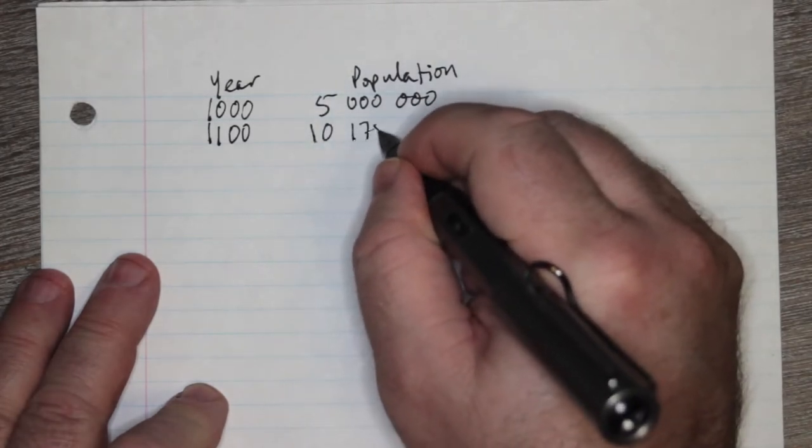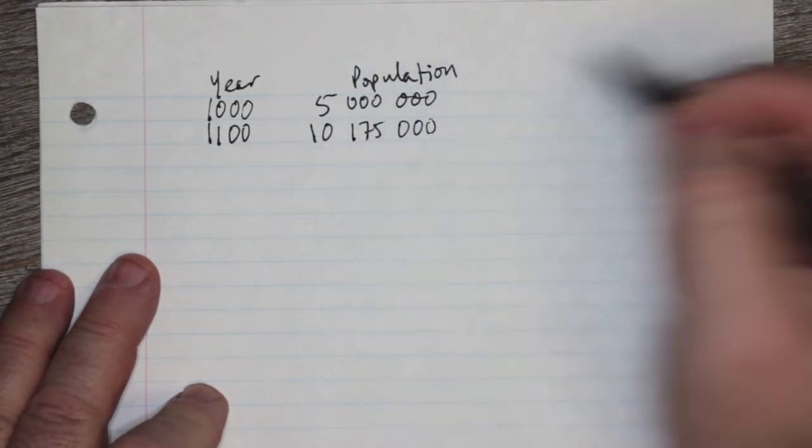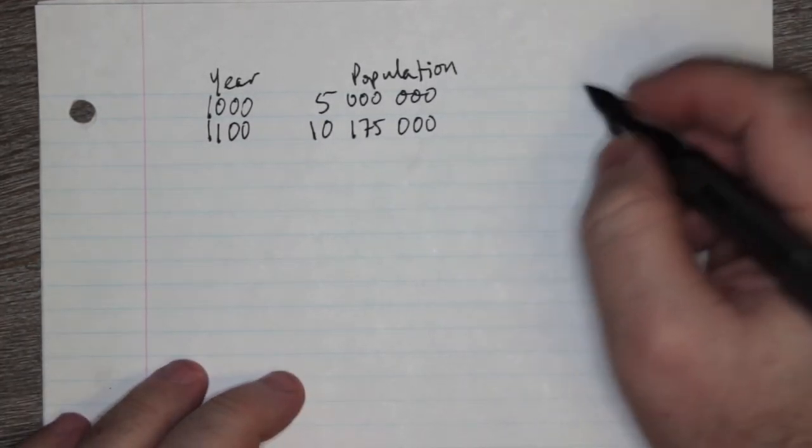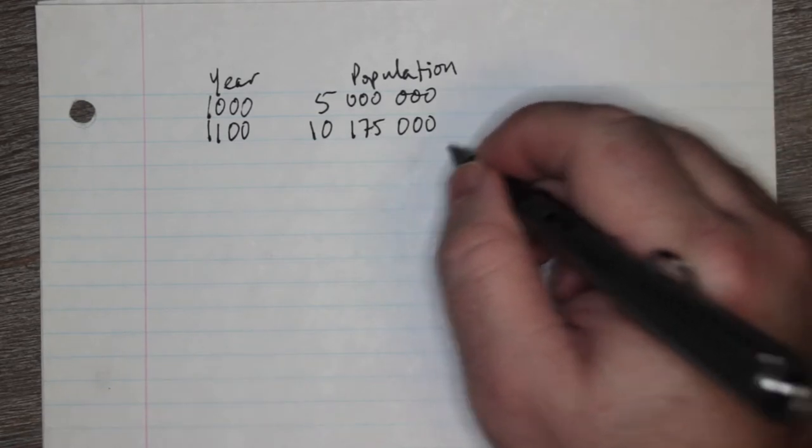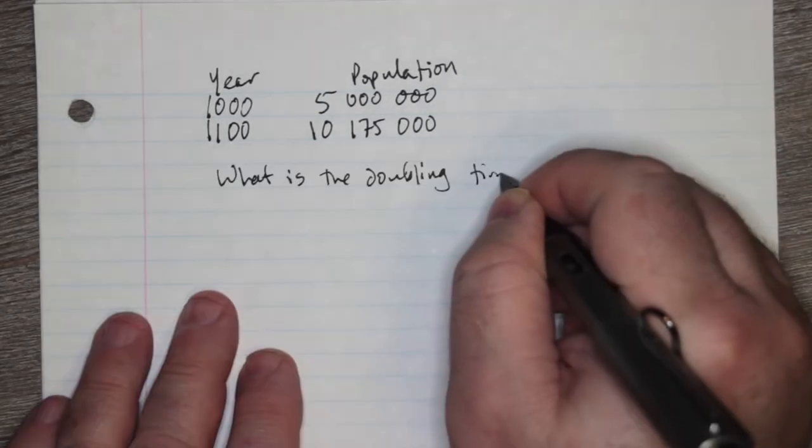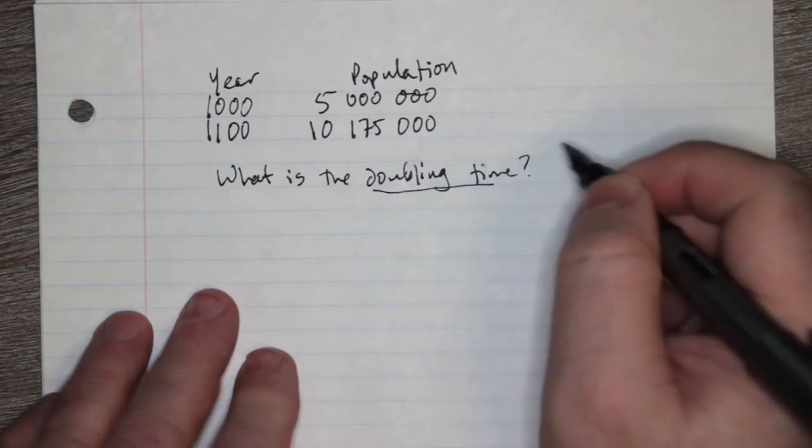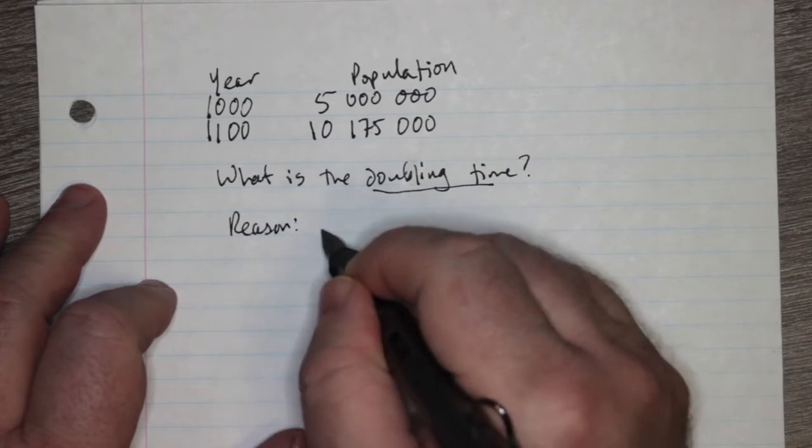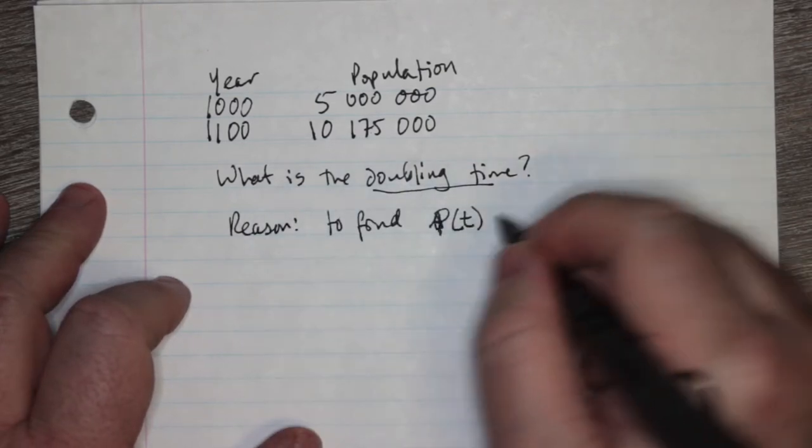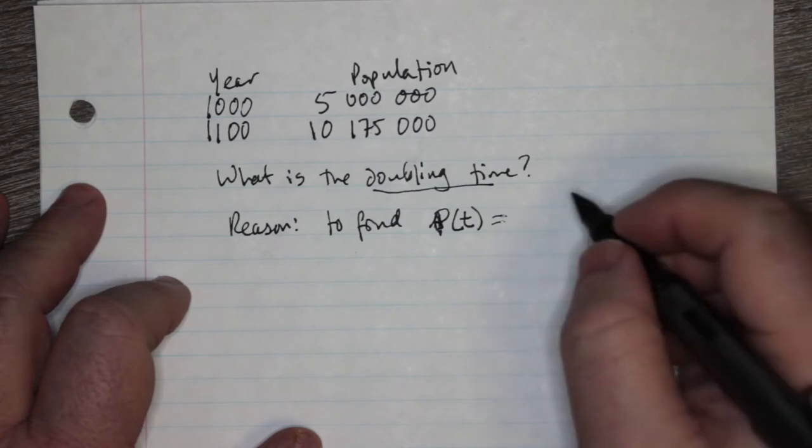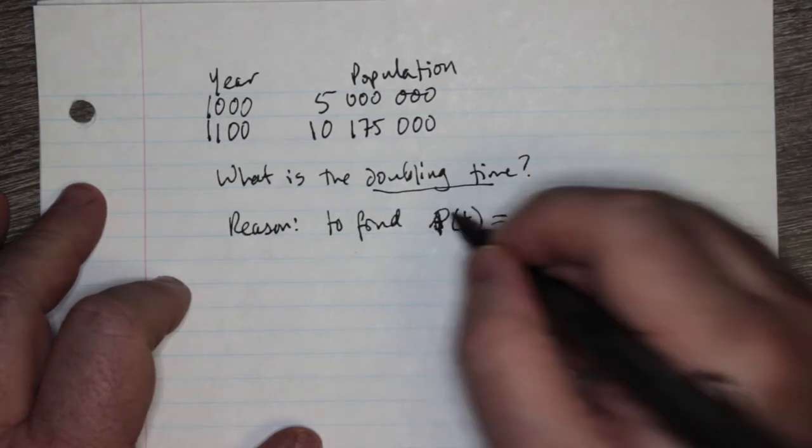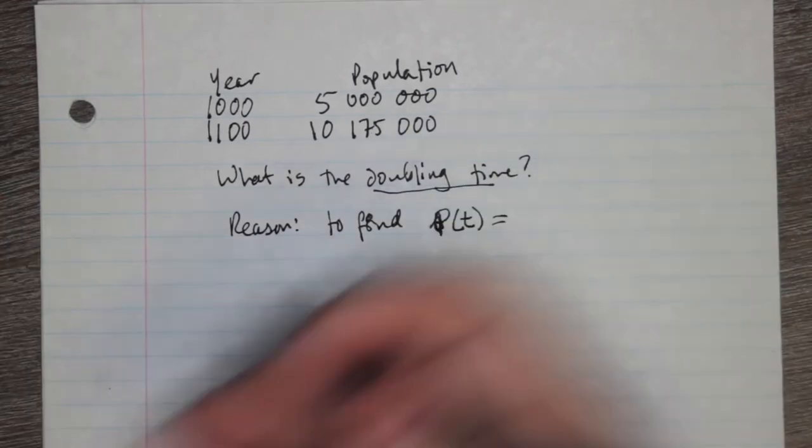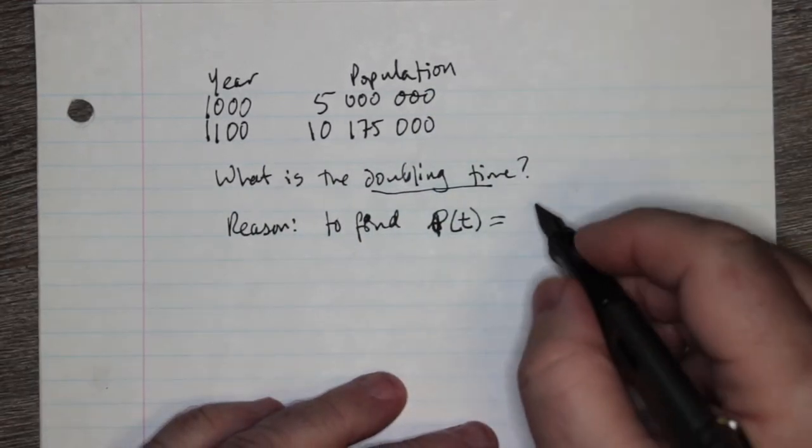You can see it's roughly double but it's not quite. What we want to find is the doubling time, and the reason is to find P of t, population, which looks strangely like the radioactive decay problem except this one is not a decay function, so this is a population growth function.